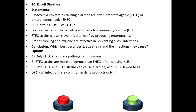Tenth question: E. coli diarrhea. Statements: E. coli strains causing diarrhea are often enterotoxigenic (ETEC) or EHEC. EHEC strains like E. coli O157 can cause hemorrhagic colitis and hemolytic uremic syndrome (HUS). ETEC strains cause traveler's diarrhea by producing enterotoxins. Proper cooking and hygiene are effective in preventing E. coli infections.